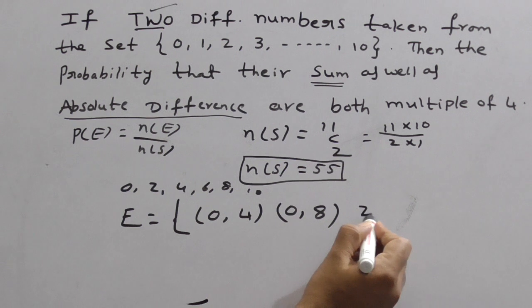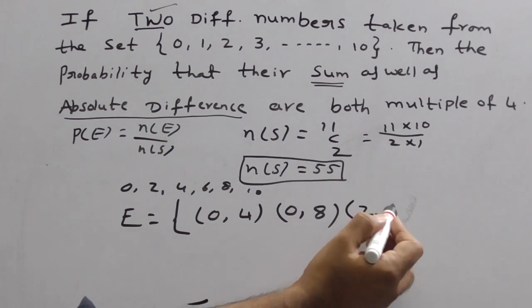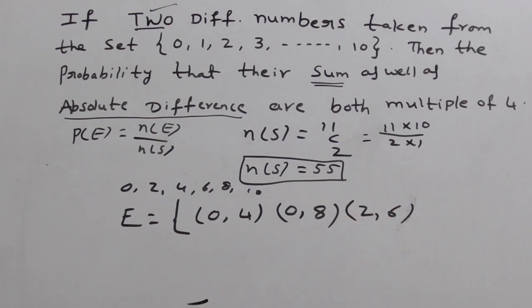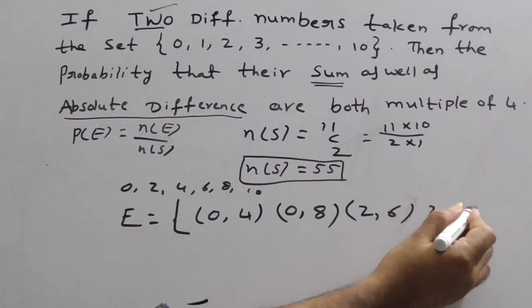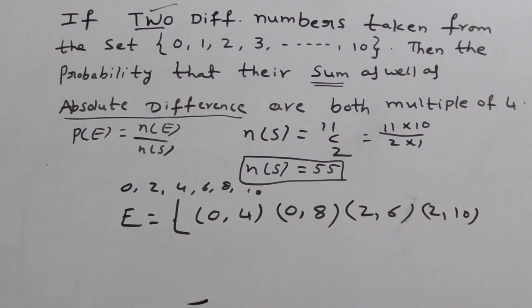Just follow this technique. For 2, what do you get? So here 2, 6 you can write. Why? Because 2 plus 6, 8. 2 minus 6, 4. Both are multiples of 4. Next number. Yes. 2, 10. You can write 2, 10. Why? 2 plus 10, 12. 2 minus 10, 8. Both are multiples of 4. Very good.